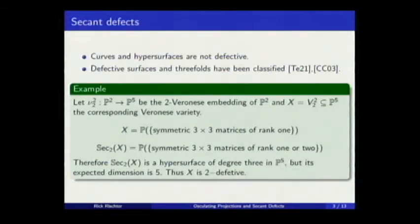This is an example of defective variety. If you consider the Veronese surface in P⁵, the Veronese surface in P⁵ you can see it as matrices of rank one. And the second secant you can see as matrices of rank one or two. Then the sec₂ of X is a hypersurface in P⁵, but its expected dimension is five. Then this is 2-defective variety or just a defective variety.